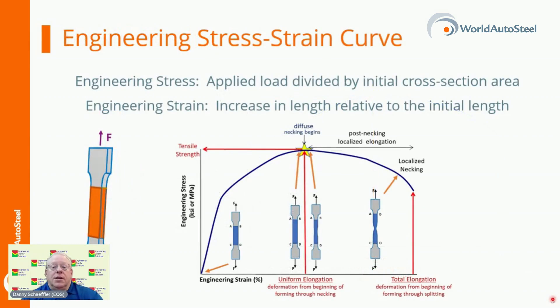During tensile testing, a standard sample shape known as a dog bone is pulled in tension. Load and displacement are recorded, which are then converted into the stress-strain curve.